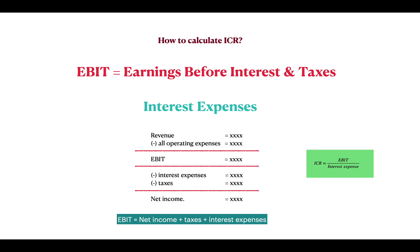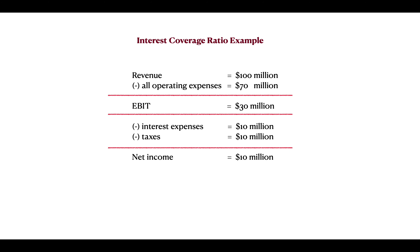Let's look at a more realistic example with numbers. For a hypothetical company, we have revenue of 100 million dollars. If we subtract all operating expenses — in this case 70 million dollars — we get earnings before interest and taxes of 30 million dollars; that is our EBIT. That money is available for paying interest and taxes, and whatever is left goes to shareholders as net income — in this case 10 million dollars. So the Interest Coverage Ratio is EBIT of 30 million divided by the interest payment of 10 million, giving us 3.